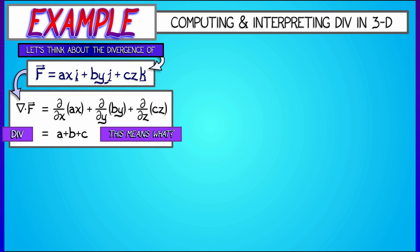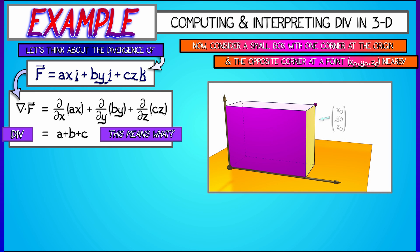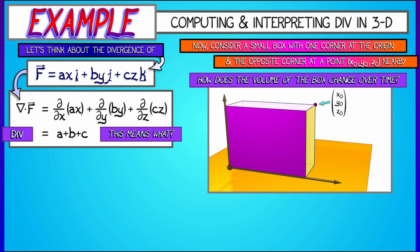Now what does this mean? Well, let's consider what happens when we take a small box, a little volume element, that has one corner at the origin and has its opposite corner at a point x-naught, y-naught, z-naught that is nearby. How does the volume of this box change if we evolve it according to the vector field?